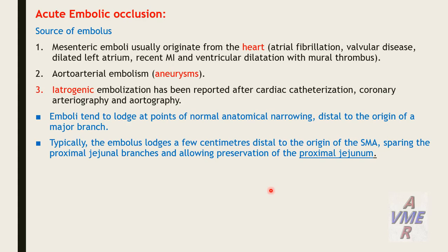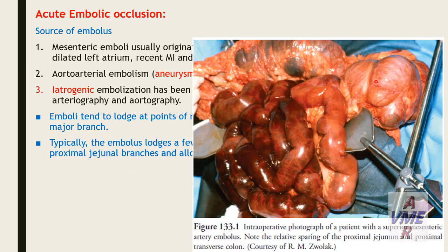Acute embolic occlusion: sources of emboli in mesenteric embolism usually originate from the heart — atrial fibrillation, valvular disease, dilated left atrium, recent MI, and ventricular dilatation with a mural thrombus. Aortic arterial embolus from aneurysm and iatrogenic embolization have been reported after cardiac catheterization, coronary arteriography, and aortography. Emboli tend to lodge at points of normal anatomical narrowing, distal to the origin of major branches — typically a few centimeters distal to the origin of the superior mesenteric artery, sparing the proximal mesenteric branch and preserving the proximal mesenteric territory.